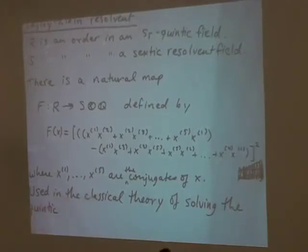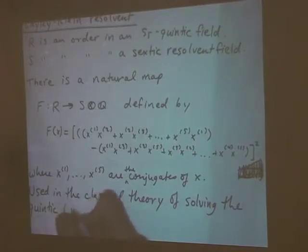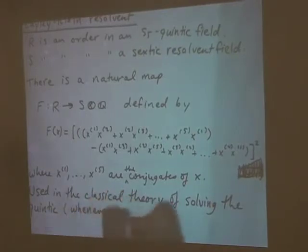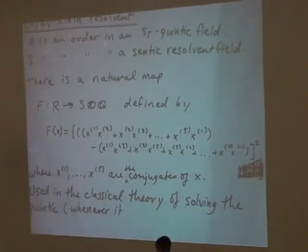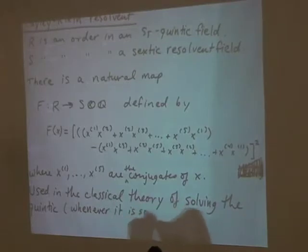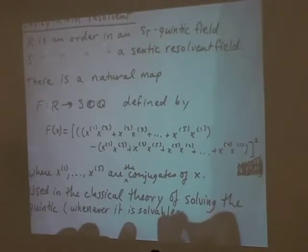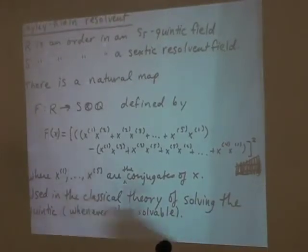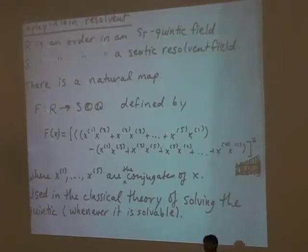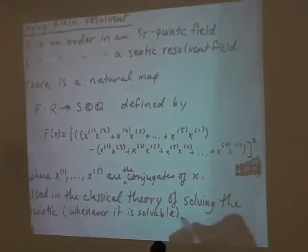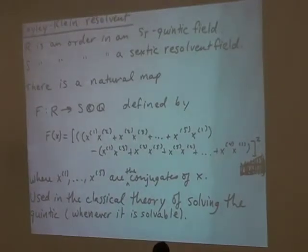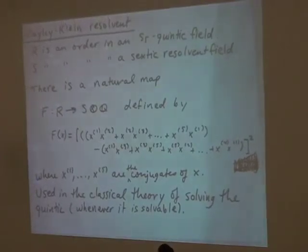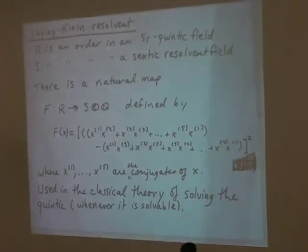The quintic everybody says is unsolvable — but whenever a quintic is solvable, this map allows you to actually solve it. It's counterintuitive that you go up to a higher degree, but when the quintic is solvable, the polynomial with these as roots factors, and you can use that factorization to get a solution. This was used very much in the classical theory.